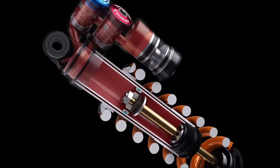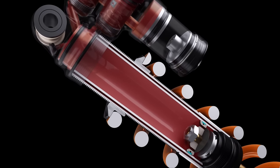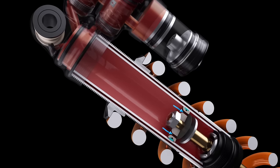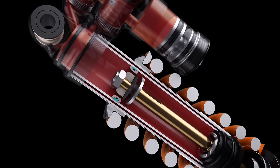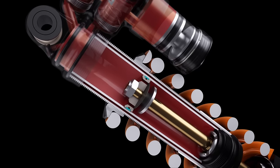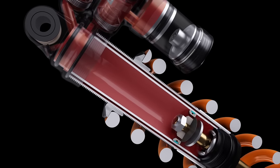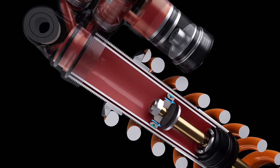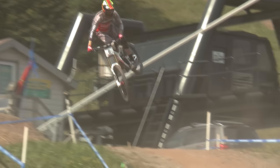X2 shocks use a unique main piston that only allows oil to flow through the shim stack during high-pressure compression. This design allows for precise damping control through the X2 rod valves at lower velocities, while providing high-pressure blow-off relief through the piston during extreme velocities.